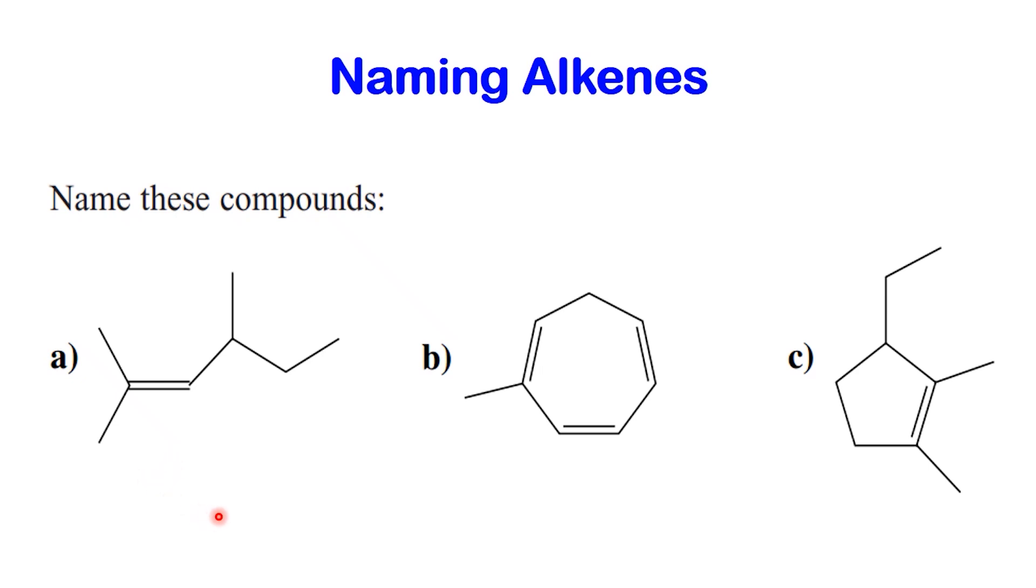Welcome back. In this lesson we're going to practice naming organic compounds using the IUPAC system. All of the molecules we'll see today contain at least one double bond. That means they are alkenes, or compounds derived from alkenes. Let's go step by step and apply the naming rules together.